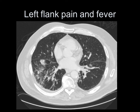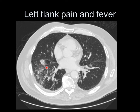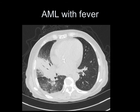This patient had left flank pain and fever. We can see some irregular areas of opacification in the right lower lobe. The most prominent one has rather irregular margins and doesn't look like it's losing any volume. There are a couple of other areas with irregular margins next to it, so this I would call an area of consolidation.